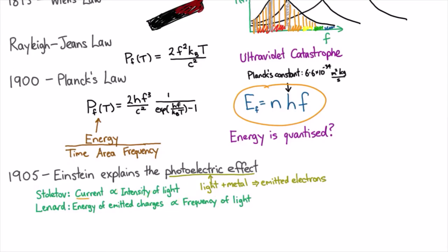So why is the current going up as you apply more intensity? Well, you'd expect more energy to be delivered, so you might expect that over time more charged particles, let's just call them electrons now, might be emitted. But why would the energy of those emitted charges only depend on the frequency? The energy of the emitted charges we might expect to also depend on the intensity, but it does not.